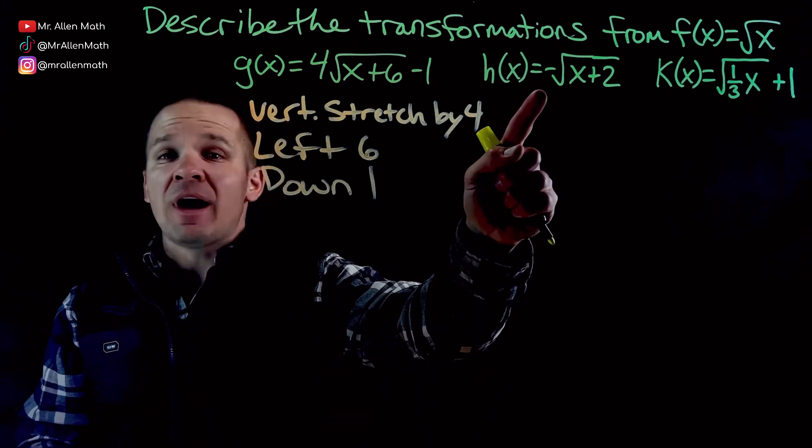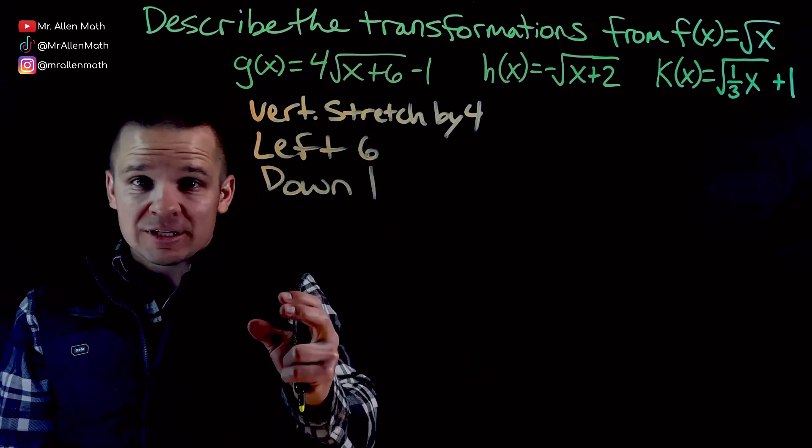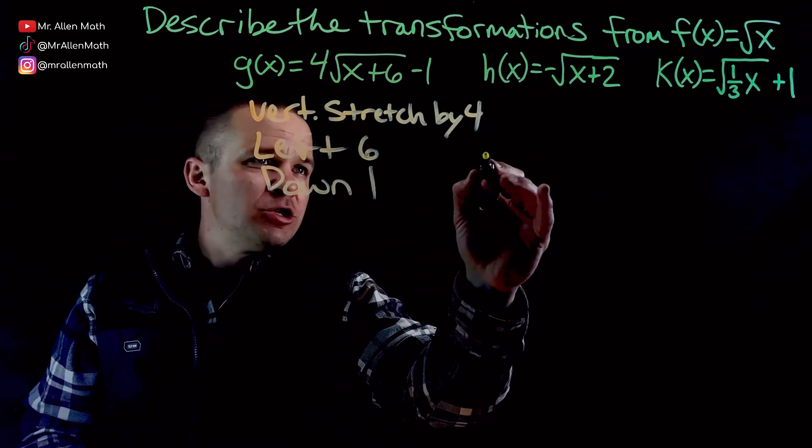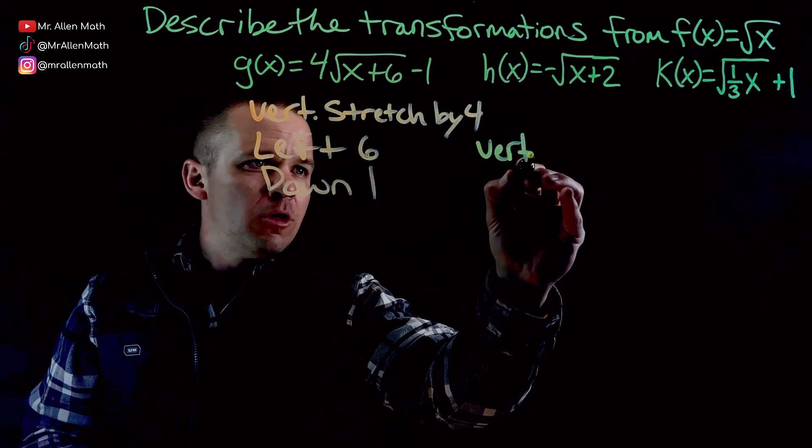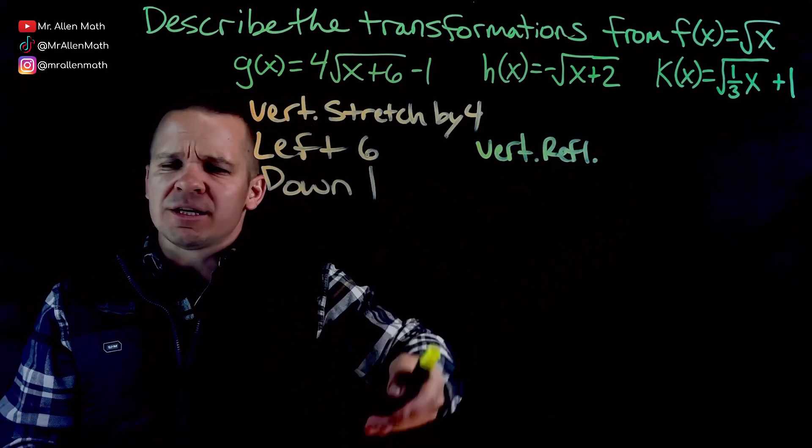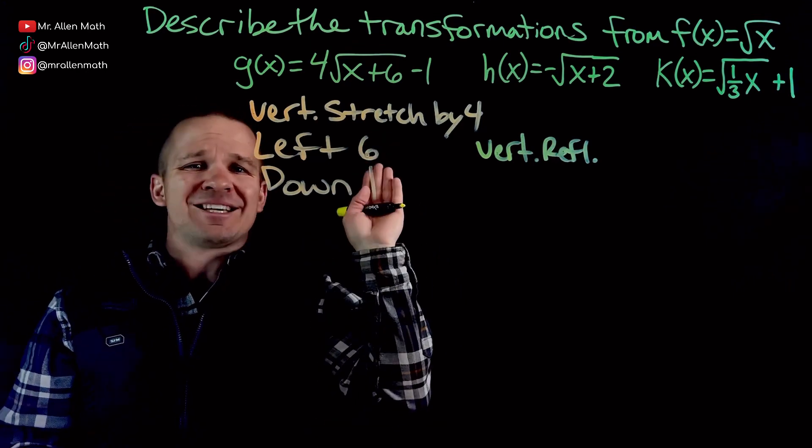So now I've got a negative out in front. What in the heck does a negative do? That is a vertical reflection. It's outside, so it's vertical. It's a negative. That is a reflection. So I'm going to jump down here real quick. Vertical reflection.